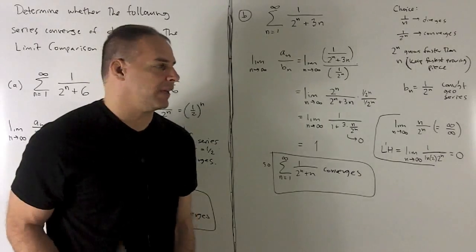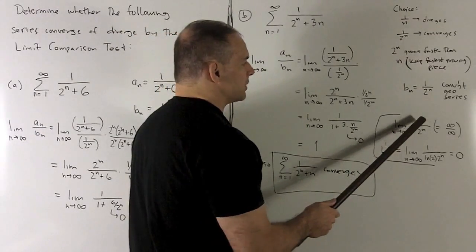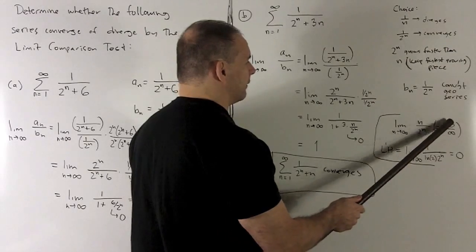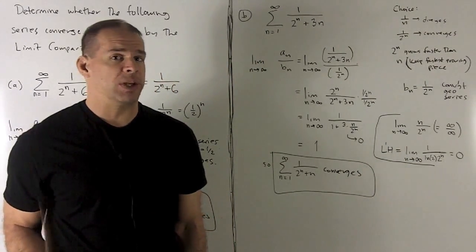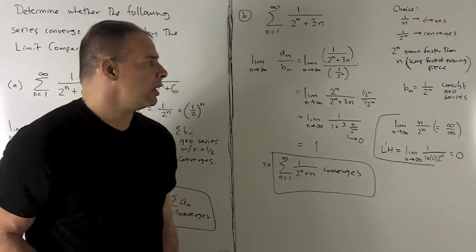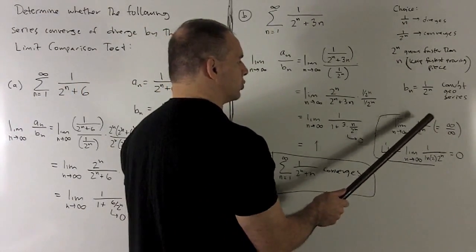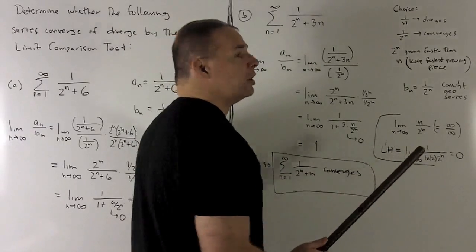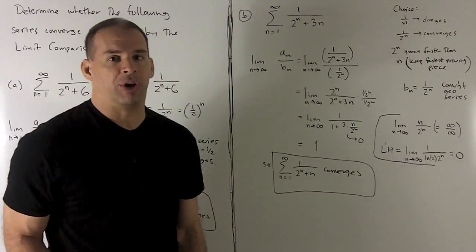Where is that going to go as n goes to infinity? Let's check. If I check what's happening in the top and bottom, we wind up with an infinity over infinity, which means we have an indeterminate form, which means we could try L'Hôpital's rule. L'Hôpital's rule says when you have an indeterminate form, take the derivative of the top, derivative of the bottom, try your limit again. If you get something sensible out of it, that's going to be your answer.